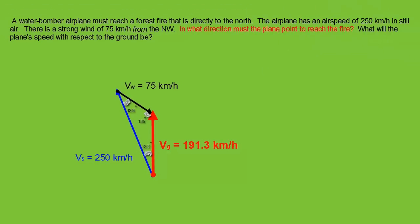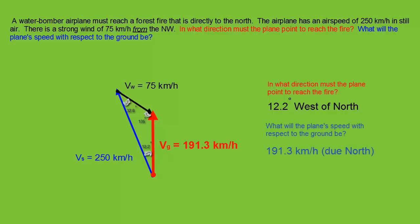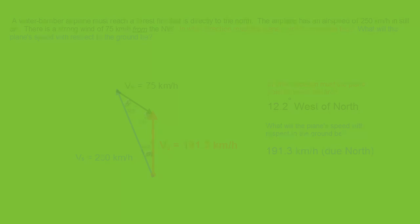Zooming back out, let's arrange our final answer. In what direction must the plane point to reach the fire? We found that to be 12.2 degrees west of north. And what was the plane's speed with respect to the ground? 191.3 kilometers an hour due north.